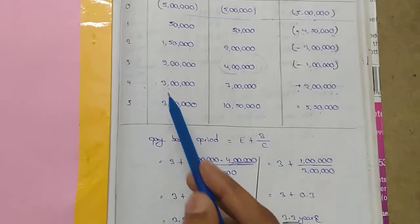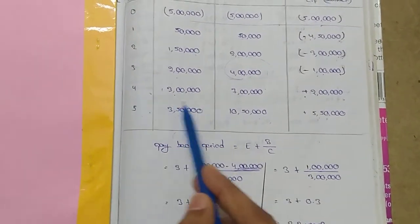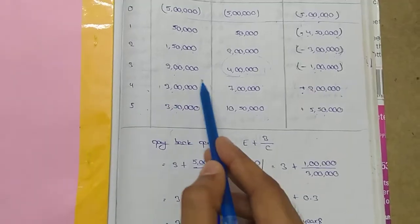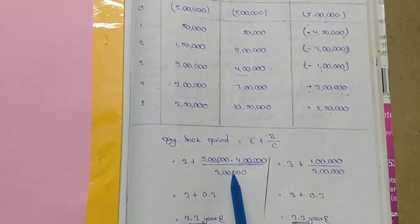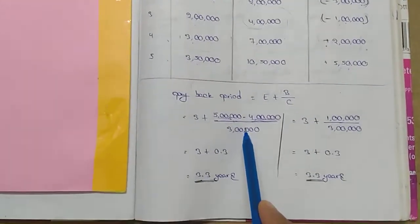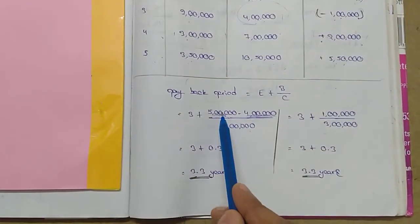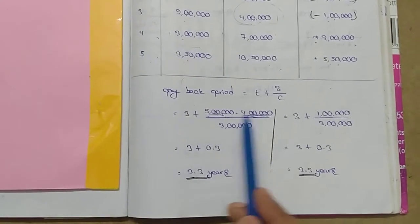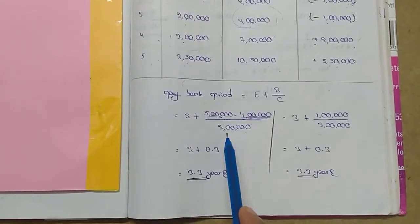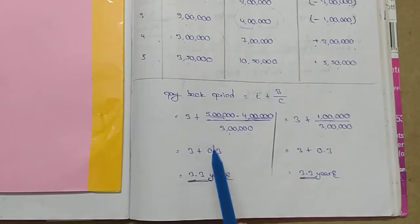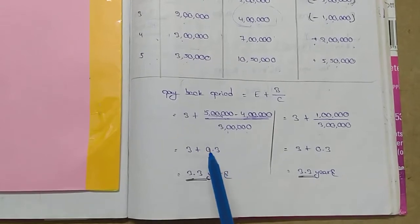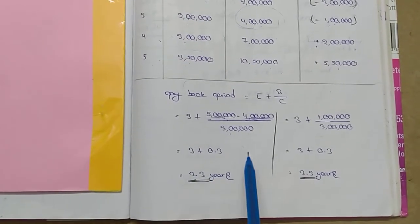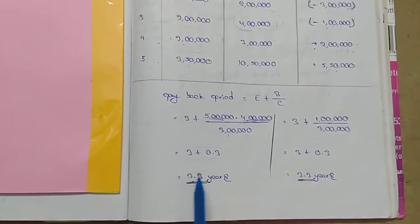So we calculate: one lakh divided by three lakhs equals 0.33. Therefore, payback period equals three plus 0.33, which is 3.33 years.